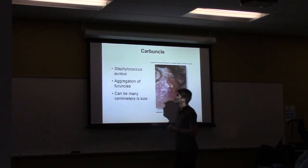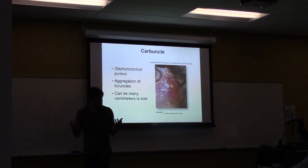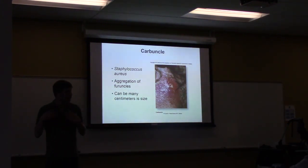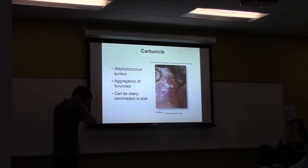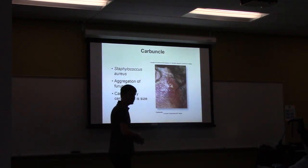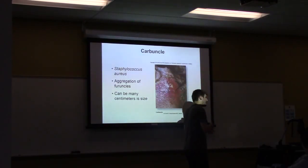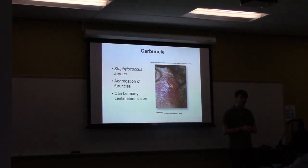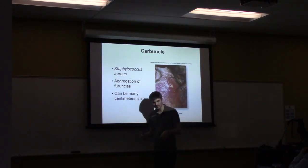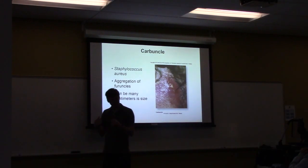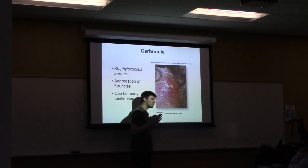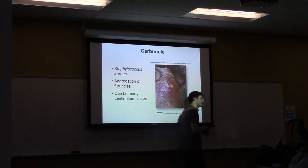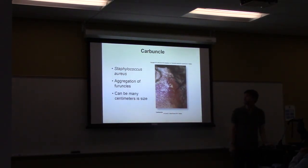A carbuncle is multiple infected hair follicles — even larger and more painful than a furuncle. These tend to happen in areas with a lot of hair, such as the hairline and groin. Treatment is again lancing and antibiotics. Importantly, in some areas of the body like the buttocks where there's thick tissue, instead of growing outward and forming a boil, it can grow inward, which is extremely painful and usually requires surgical removal.